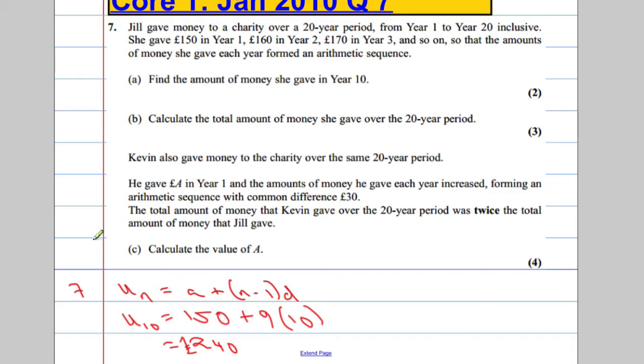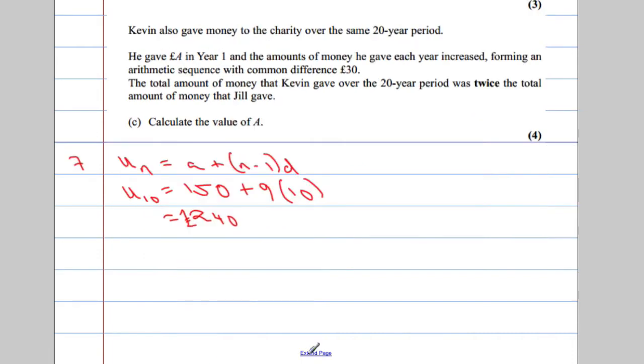Part B, calculate the total amount of money she gave over the 20-year period. So, basically, we want to know, after 20 years, that was part A, and this is part B. Right, so over 20 years, how much money did she give?